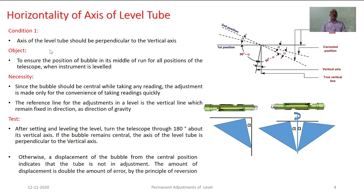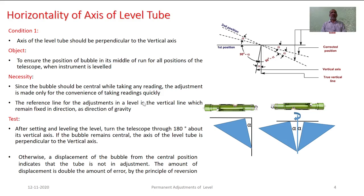The first condition is that the axis of the level tube should be perpendicular to the vertical axis. The basic objective is to ensure the bubble remains in the middle of its run for all positions of the telescope when the instrument is leveled. This is necessary because the bubble should remain at the center while taking a reading. This adjustment is more for convenience, to save time when leveling the equipment prior to taking a reading. It is also necessary to have a reference line that remains in the fixed direction of gravity.